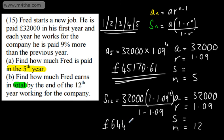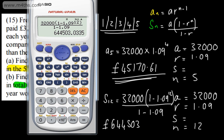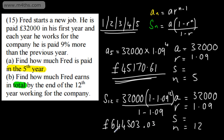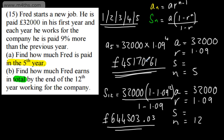32,000 times 1 minus the 1.09 to the power of 12, then we're going to divide this by 1 minus 1.09. That is going to give 644,503 pounds. So, 644,503 pounds and 3 pence. Now, often, you'll be asked to give this to the nearest pound or to the nearest 10p or to the nearest penny. No level of accuracy here. I'm just rounding them to an appropriate degree of accuracy.